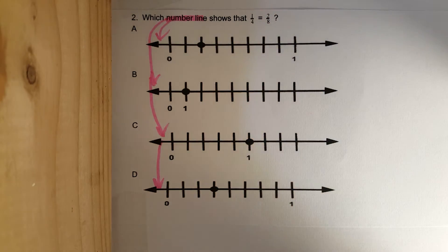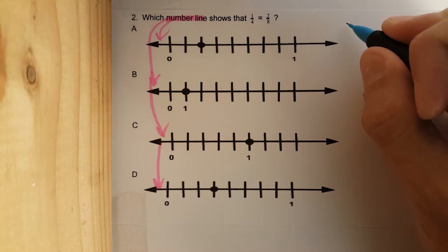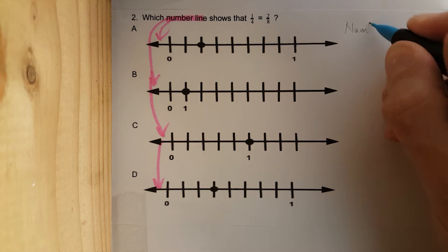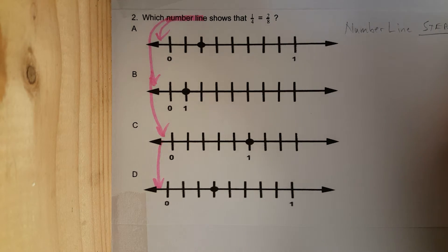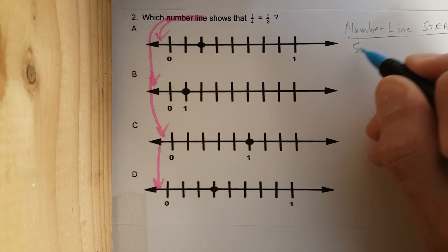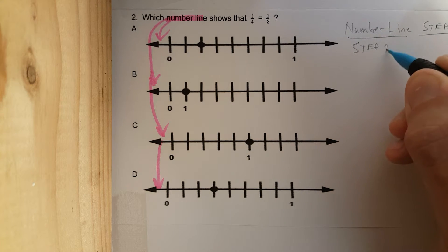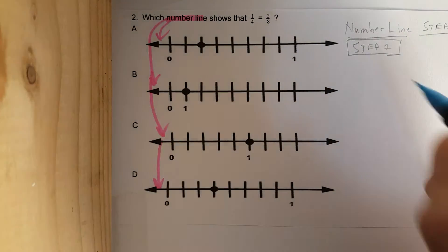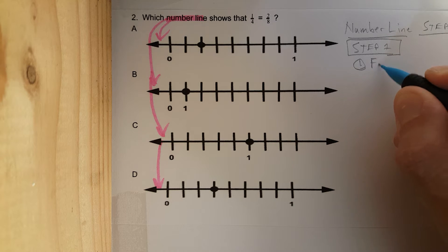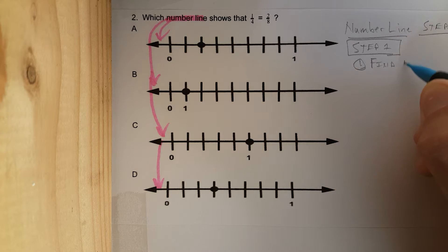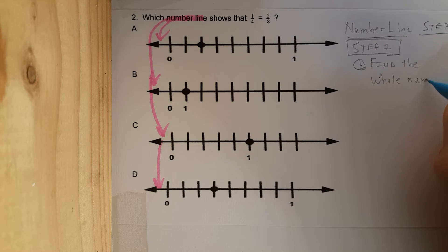To work through this number line system, I'm going to write out number line steps. Step one — the first thing we are going to do: find the whole number.